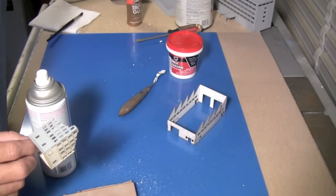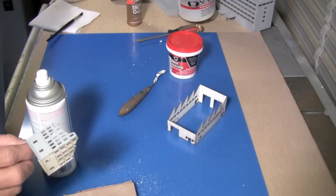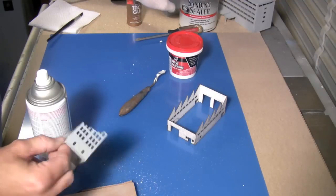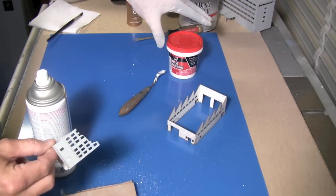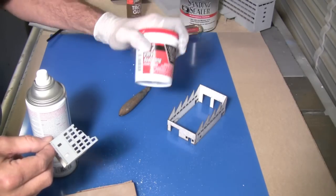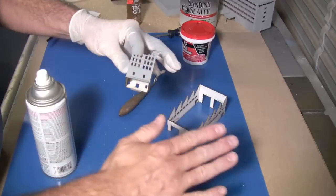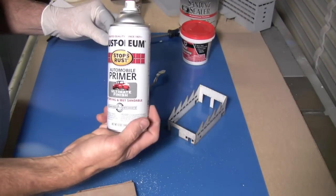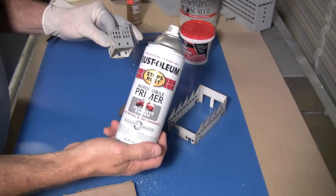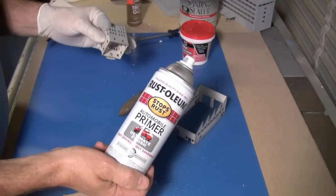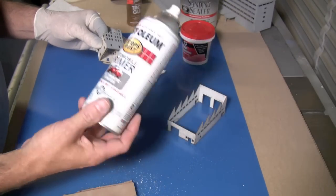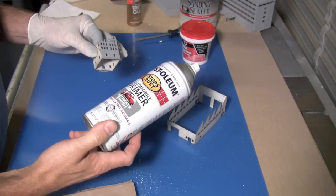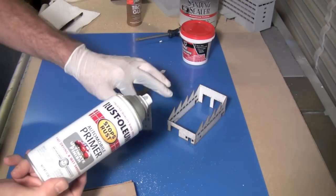So the sanding sealer first, get that on there, let it dry. The can says it takes about an hour to dry. It doesn't take quite that long. But then again, I live in the desert, so maybe it'll take an hour where you live. So put the sanding sealer on, then do your spackling. Get that on there. Sand off the extra spackling. And then I like to do a primer. And I like to use good old Rust-Oleum automotive gray primer. This is my favorite primer, aside from ones that you would shoot through a professional gun. And anything that comes in a rattle can, this is my favorite. I'm not a big fan of Rust-Oleum paints in general, but I do like their primer. So that's what I use on my models.